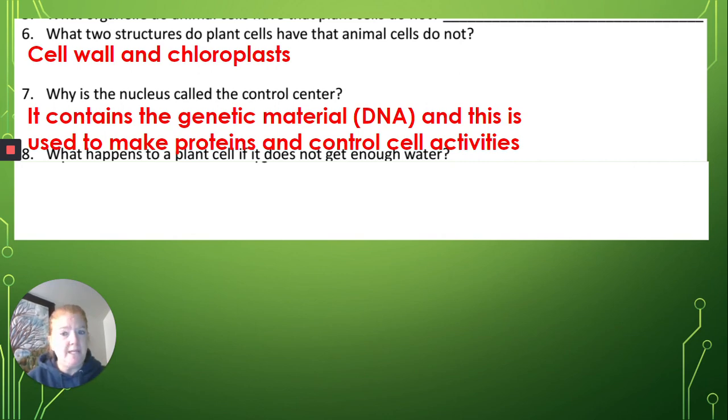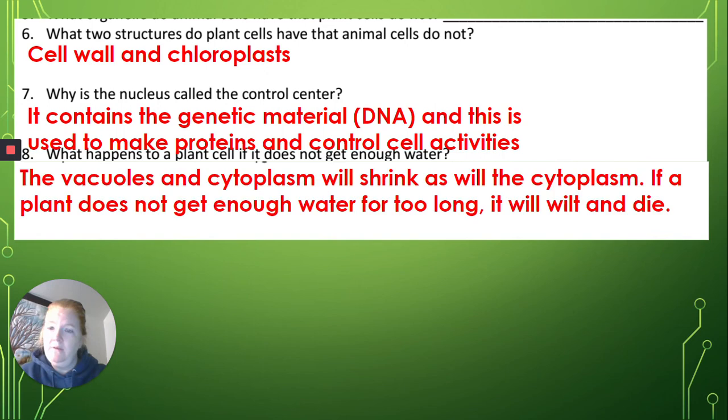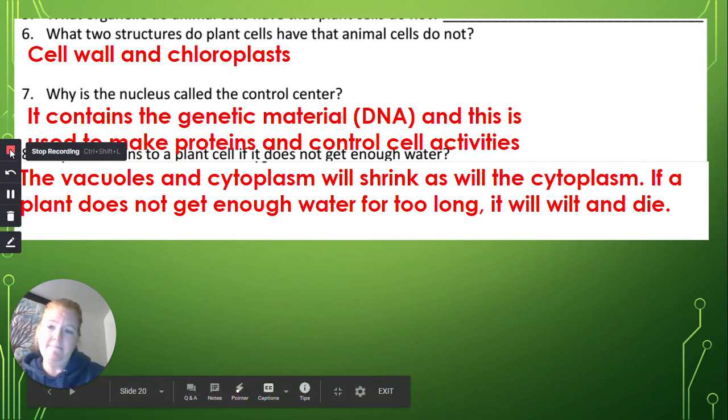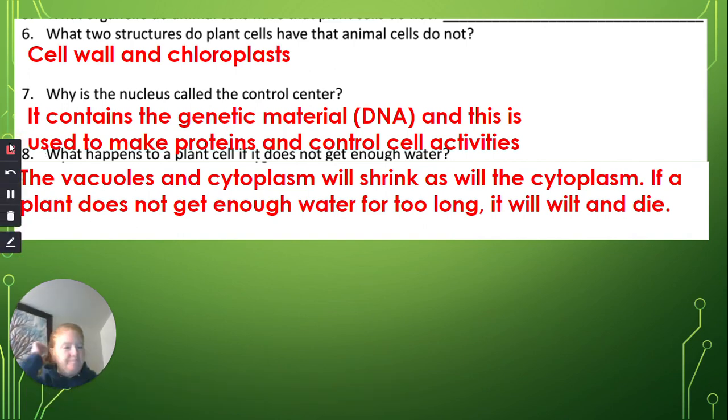And what will happen to a plant cell if it doesn't get enough water? Well, the vacuoles and the cytoplasm will start to shrink as the cell is losing water. And if a plant doesn't get enough water for too long, it will start to wither, wilt, and eventually can die. All right.